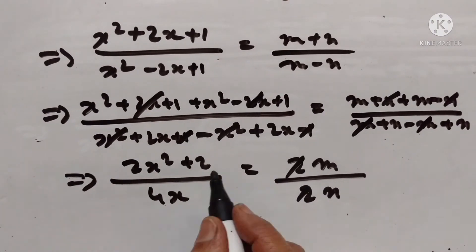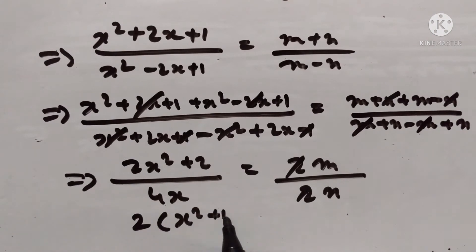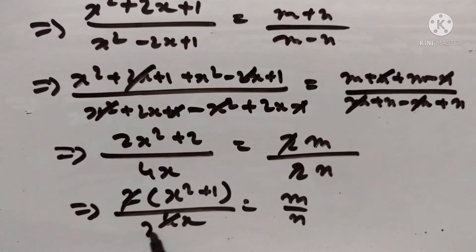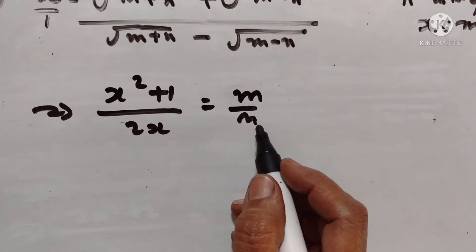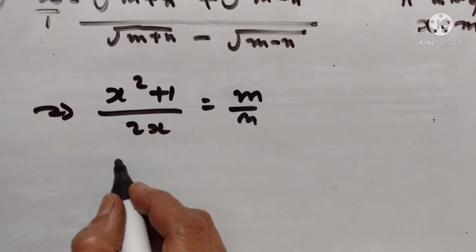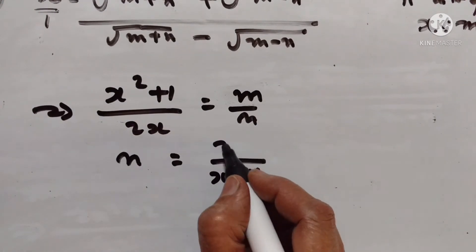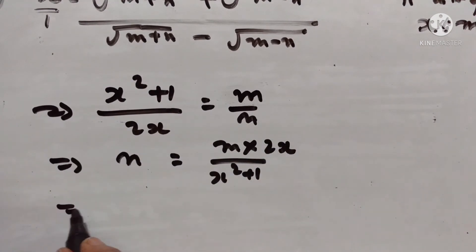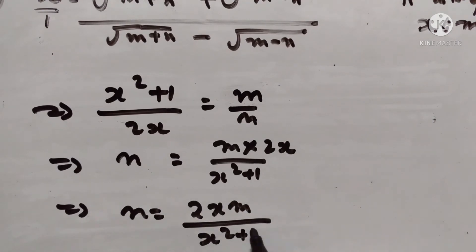So 2 is common. We get 2 into x squared plus 1 upon 4x is equal to m upon n. We have to express n in terms of x and m, so n goes to the denominator and x squared plus 1 goes to the denominator, and m into 2x goes to the numerator. So n is equal to 2xm upon x squared plus 1.